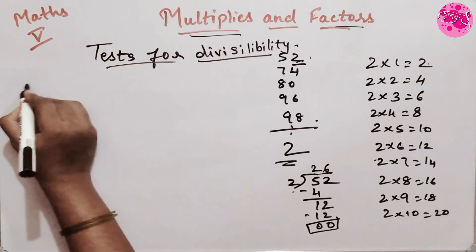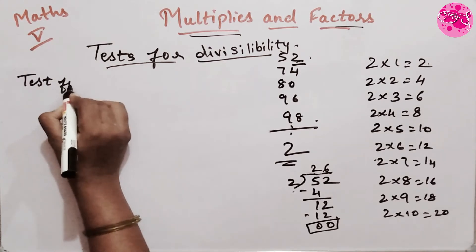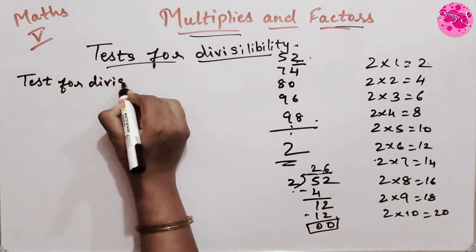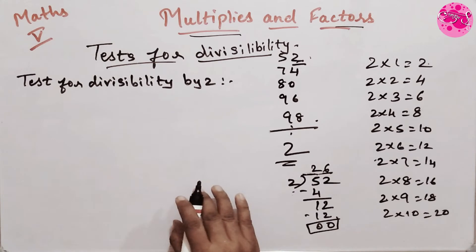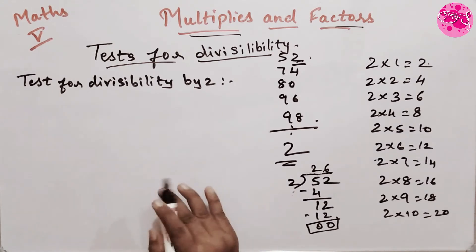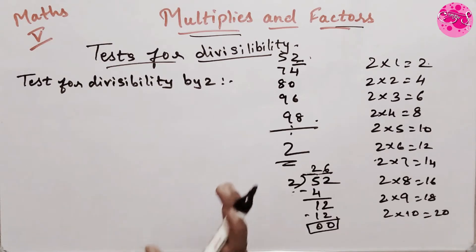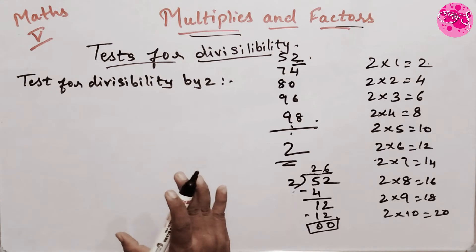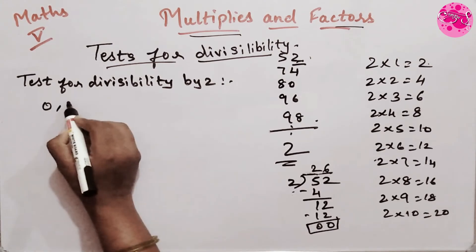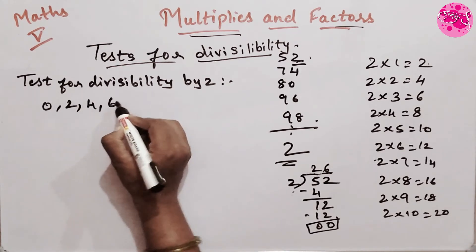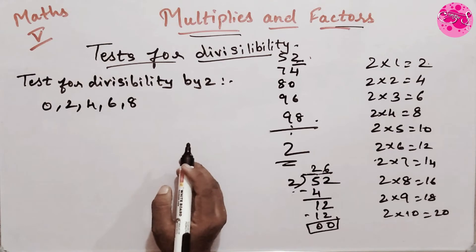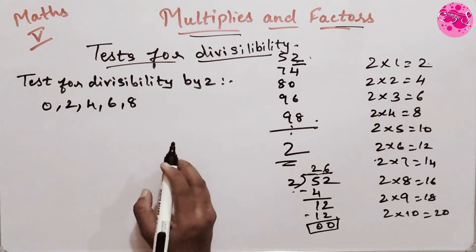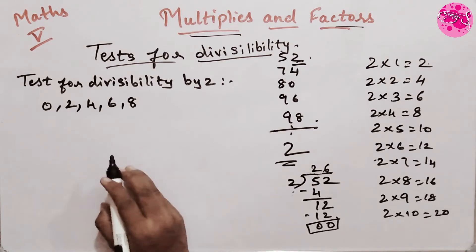Test for divisibility by 2: whenever we need to find out if a number is divisible by 2, just remember one thing — if there is 0, 2, 4, 6, or 8 in the units place, the number is a multiple of 2, or is exactly divisible by 2.